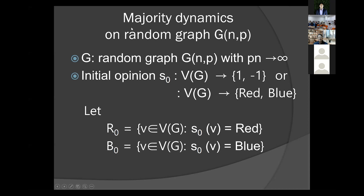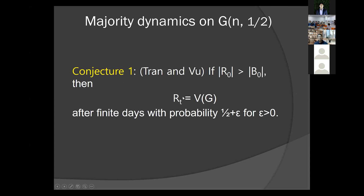We are going to study majority dynamics on a random graph. Our graph G is G(n,p) where p times n goes to infinity, and we have an initial opinion. R0 is the set of red vertices and B0 is the set of blue vertices initially.